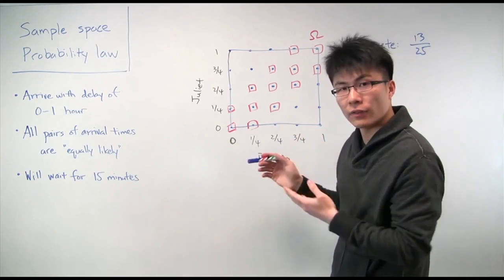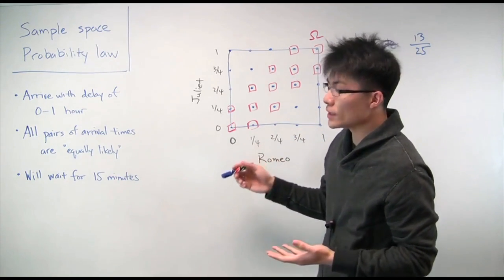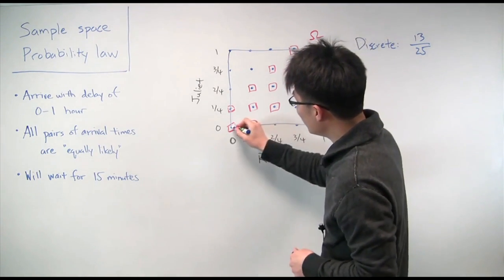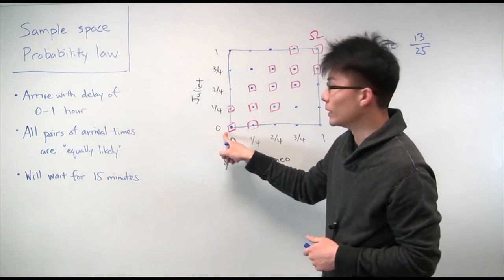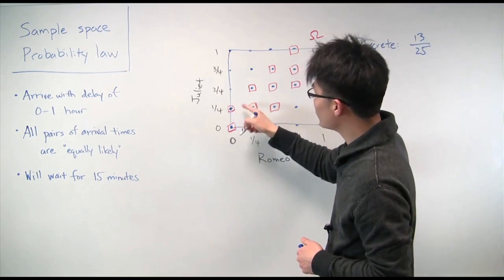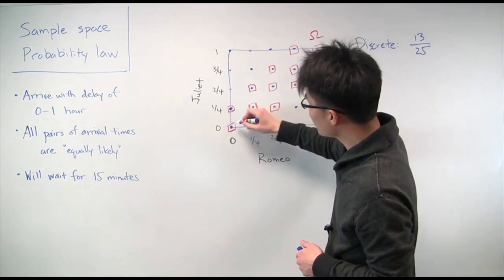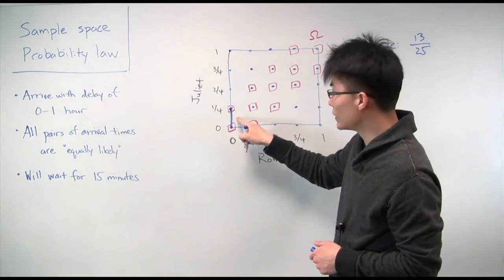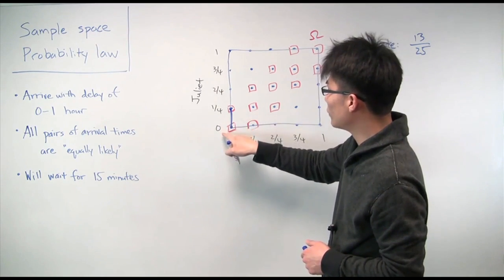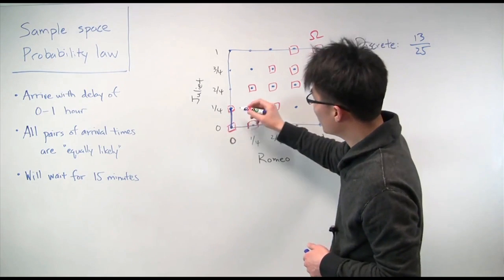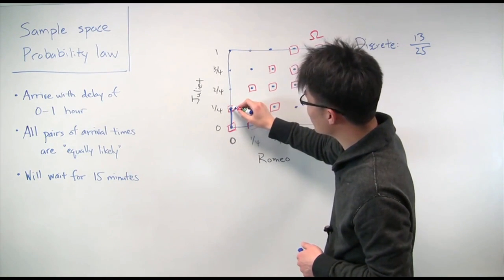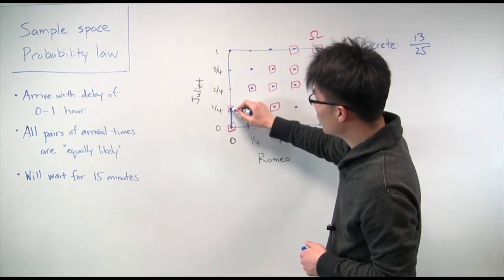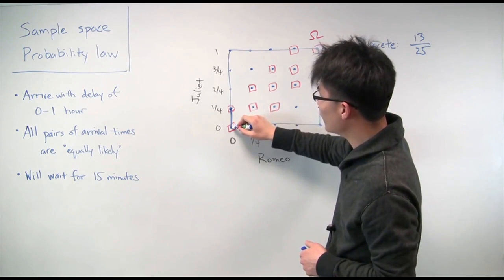So what we have to do now is just identify the event of interest, which is still the event that Romeo and Juliet arrive within 15 minutes of each other. So let's do that. If Romeo and Juliet arrive both on time, then obviously they'll meet. And if Romeo is on time and Juliet is 15 minutes late, then they will still meet. And in fact, any pairs of meeting times between these would still work. Because now Romeo can be on time and Juliet can arrive at any time between 0 and 15 minutes late. But you can notice that if Juliet is even a tiny bit later than 15 minutes, then they won't end up meeting.